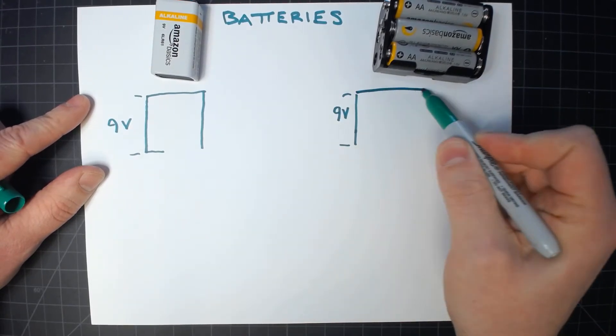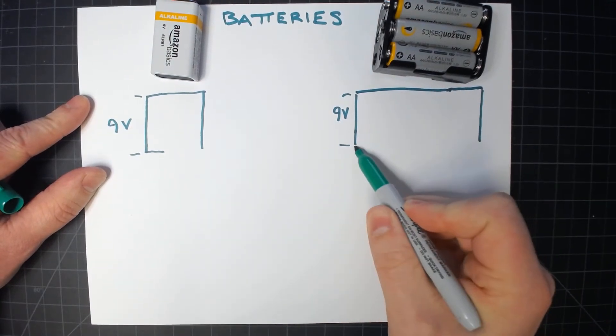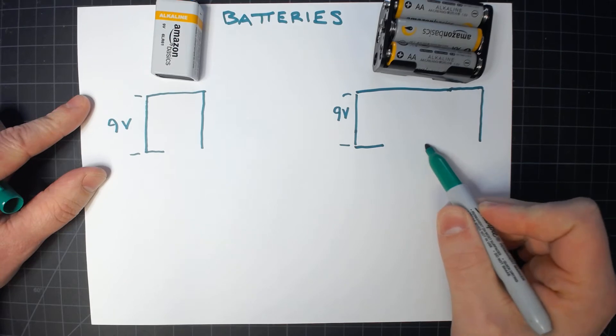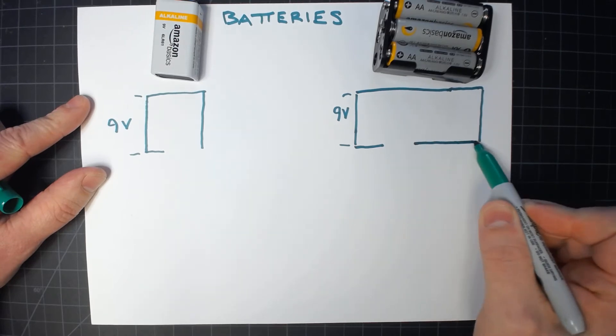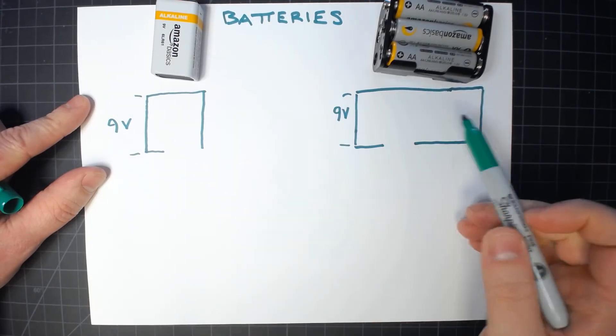The difference, the first difference, is in the capacity of the battery. So in this case if I'm using my water tank analogy, it's how much water fits in the tank. This is much smaller than this.